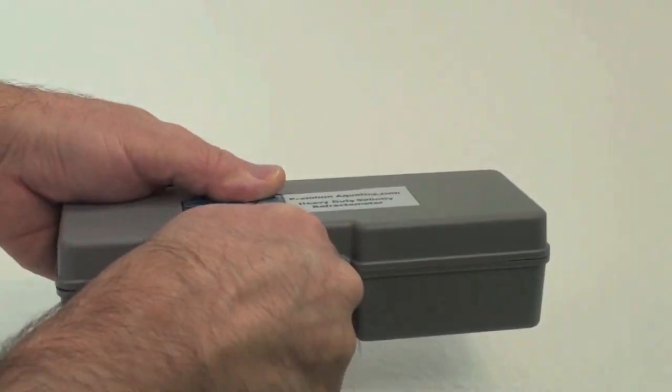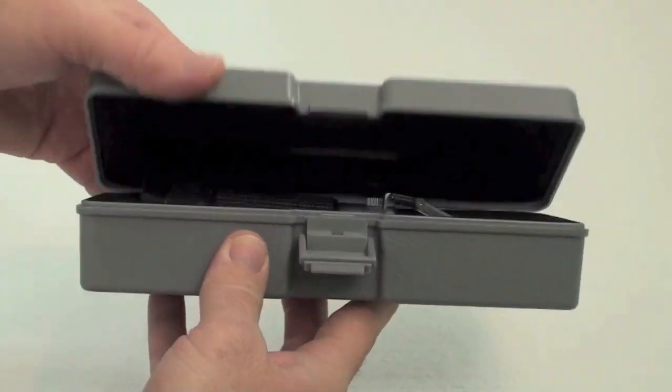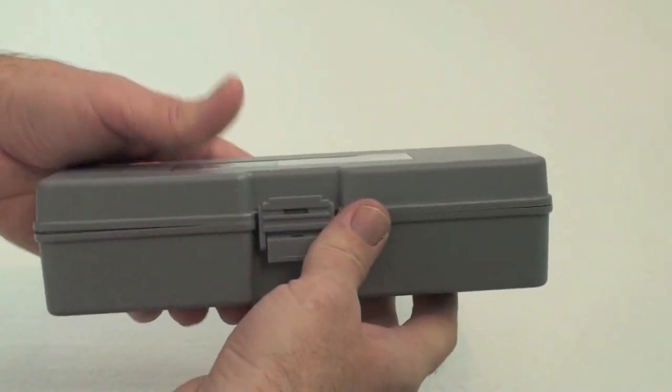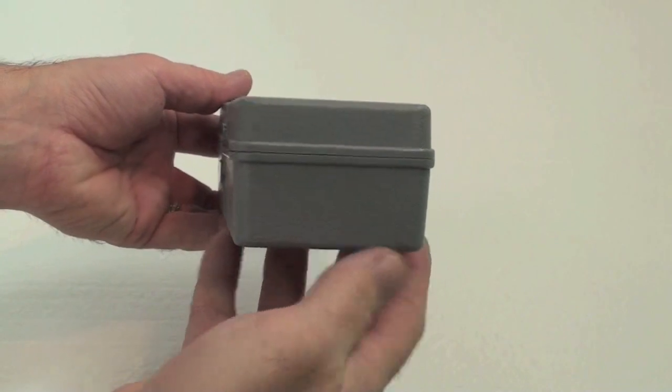Keep in mind that the further outside this range the temperature is, the more inaccurate your reading will be. The RHS-10ATC refractometer comes with a gray hard plastic case.